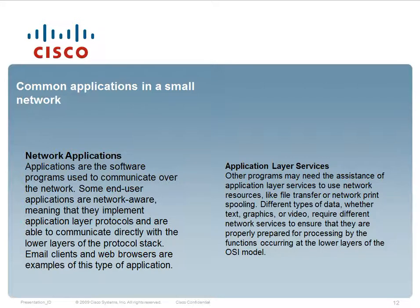Common applications in a small network: applications are the software programs used to communicate over the network. Some end-user applications are network-aware, meaning they implement application layer protocols and are able to communicate directly with the lower layers of the protocol stack. Email clients and web browsers are examples of this type of application. Other programs may need the assistance of application layer services to use network resources like file transfer or network print spooling. Different types of data — whether text, graphics, or video — require different network services to ensure they are properly prepared for processing at the lower layers of the OSI model.